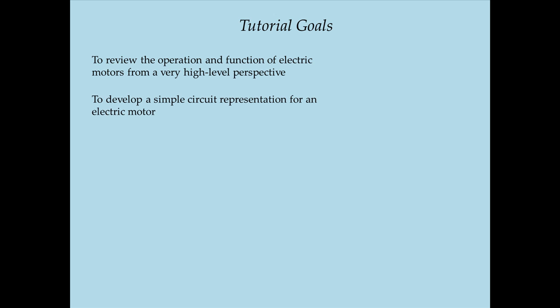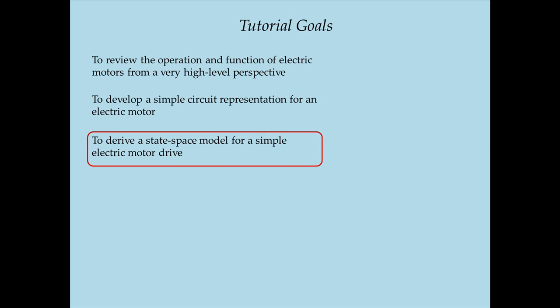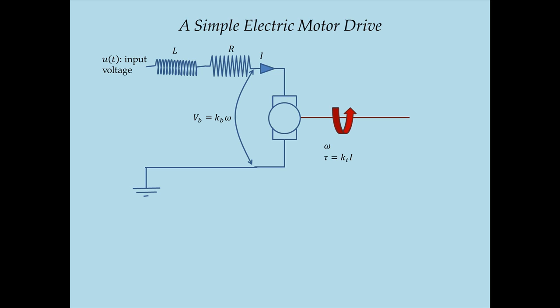The last thing I want to do in this tutorial is develop a state-space model for a simple electric motor drive. The difference between an electric motor and an electric motor drive is that when modeling a drive, I take into account the mechanical side — the bearings, inertias, etc. My electric motor drive consists of an electric motor whose output shaft is mounted in a bearing with damping represented by a linear damping coefficient C, and perhaps that shaft is trying to make an inertia rotate with angular moment of inertia J. The output variable is the angular velocity of the inertia.